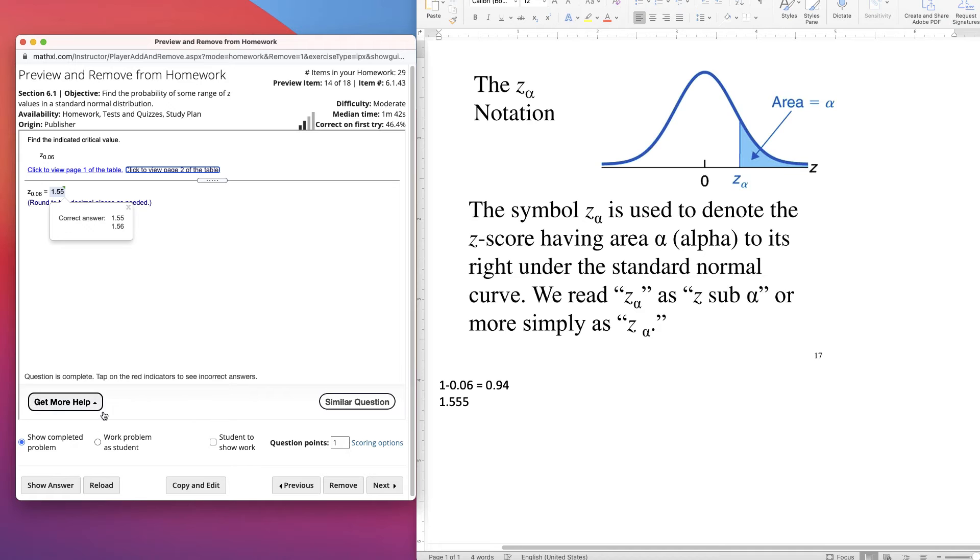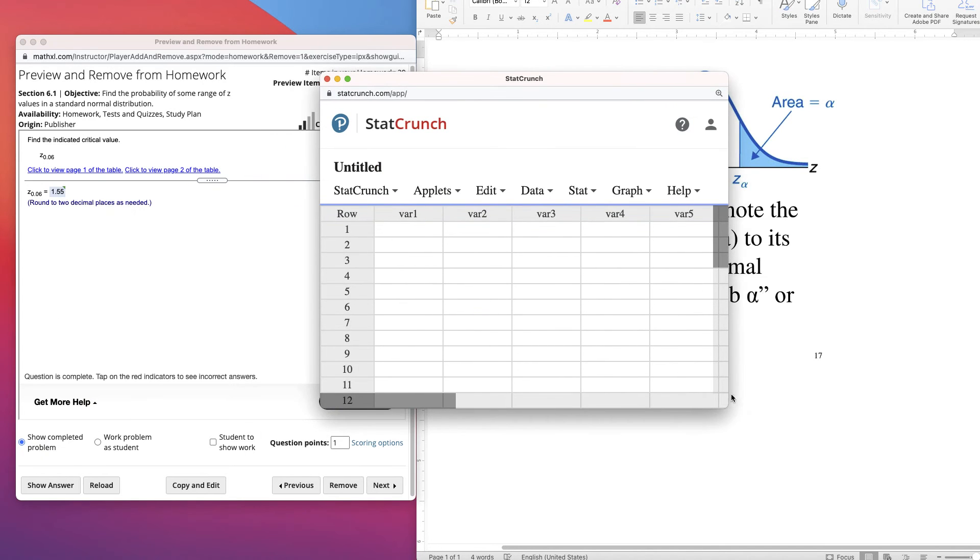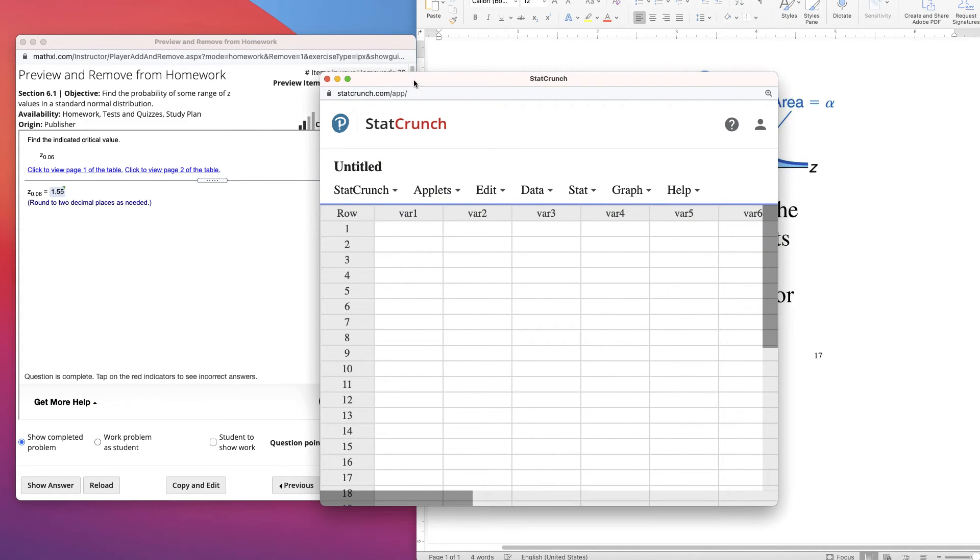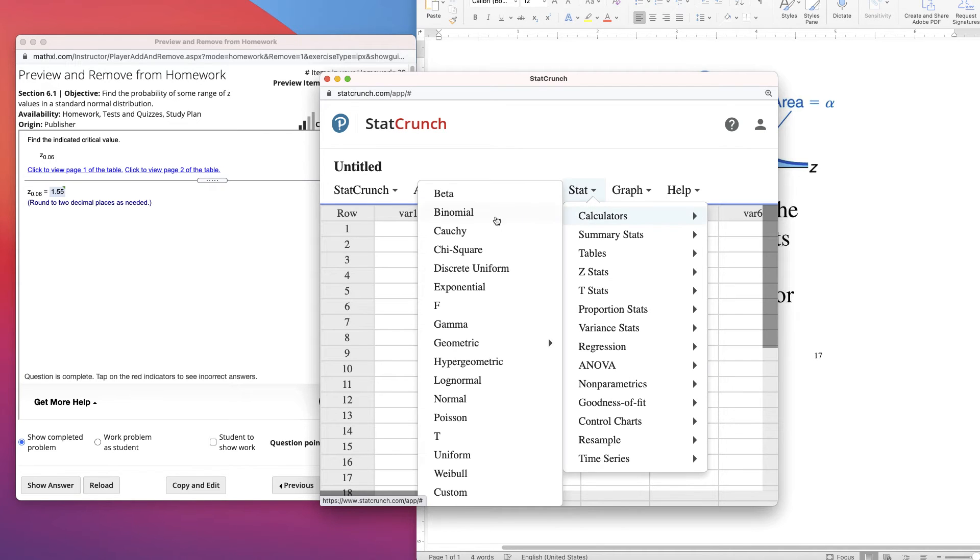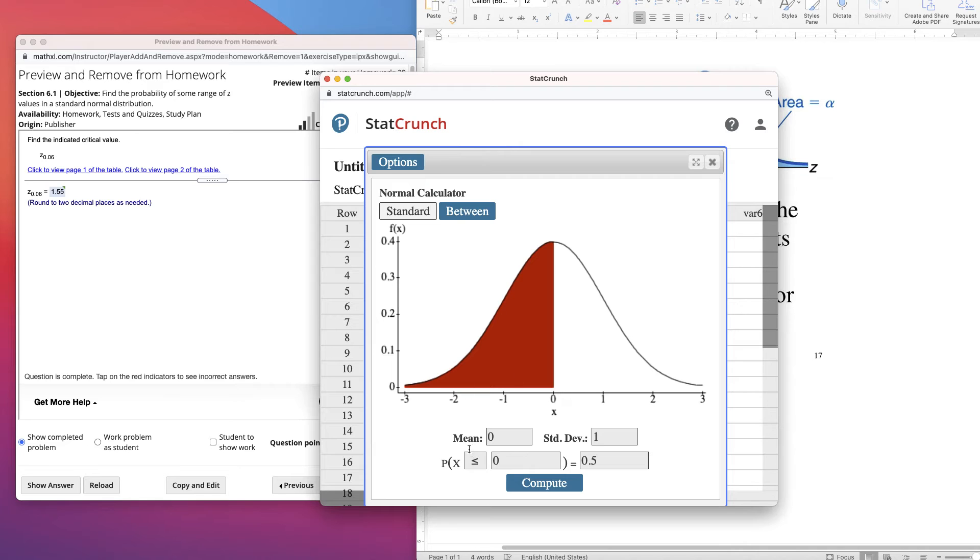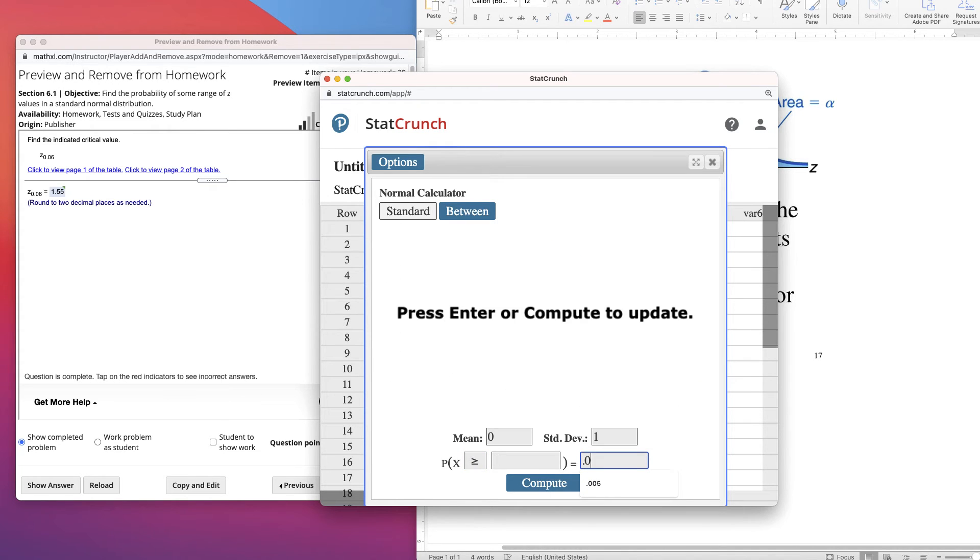Now you could also use StatCrunch. We'll use the normal calculator here. Stat, calculator, normal. Mean is always 0. Standard deviation is 1. And you want to the right, and you're going to fill in the area of 0.06. And it will show you that. That's to the right. It'll show you the answer, 1.5547736.